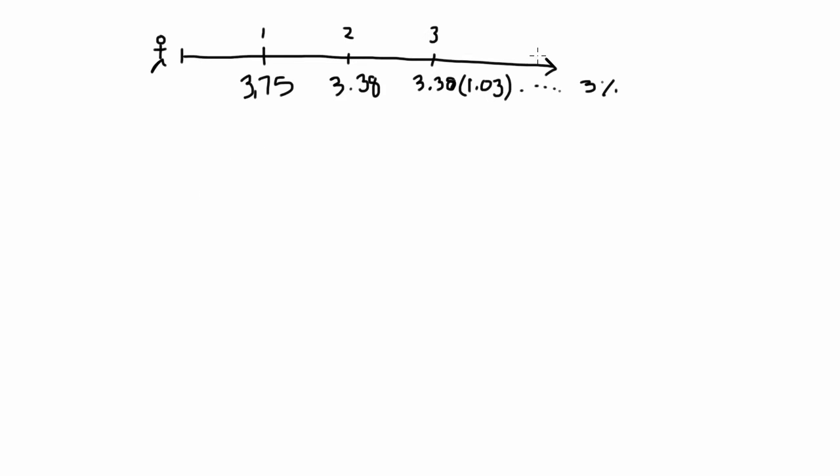Now we have a timeline, and we know that the discount rate, the appropriate rate to discount these cash flows K, is 10%. So, the first thing we need to do is to value this perpetuity, this growing perpetuity, this infinite stream of dividends.